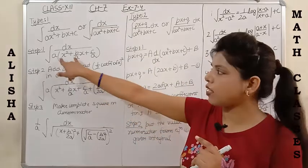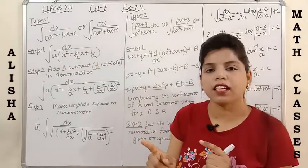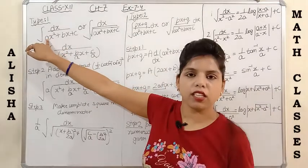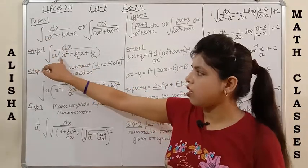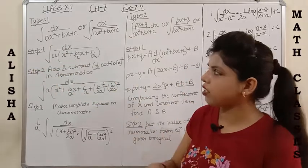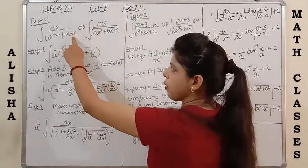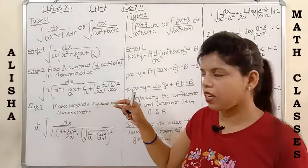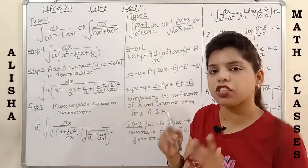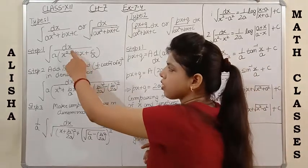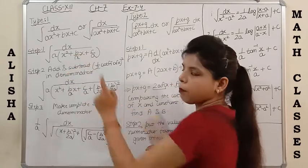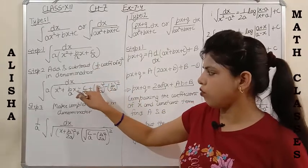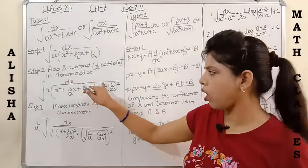The first step of the complete square method is that the coefficient of x² should always be equal to 1. If we are having any coefficient with x², we have to take 'a' as common. After taking 'a' common, we get x² + (b/a)x + (c/a). The next step is we have to add and subtract half the coefficient of x, whole square. The coefficient of x is b/a, so half of it becomes b/(2a).